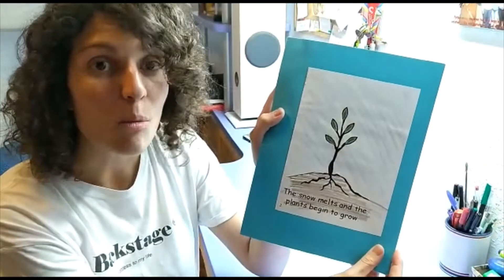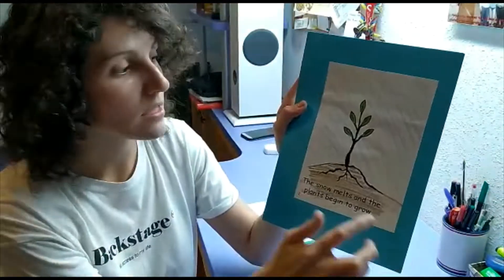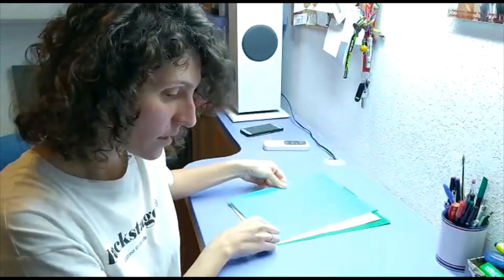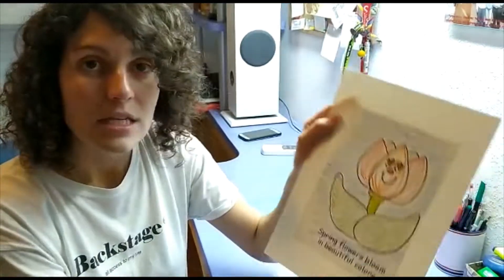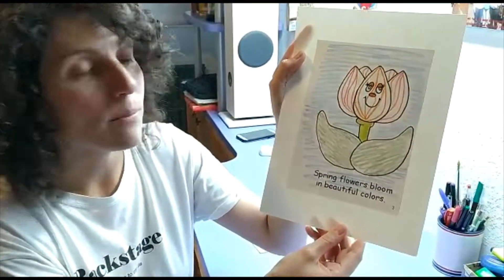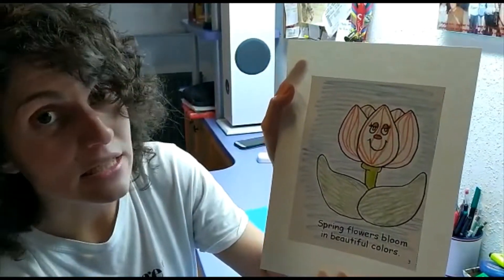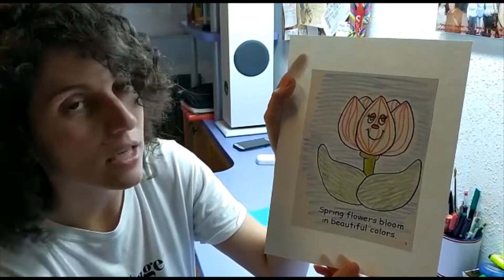The snow melts and the plants begin to grow. Spring flowers bloom in beautiful colors. I can see red, some orange, green and blue.